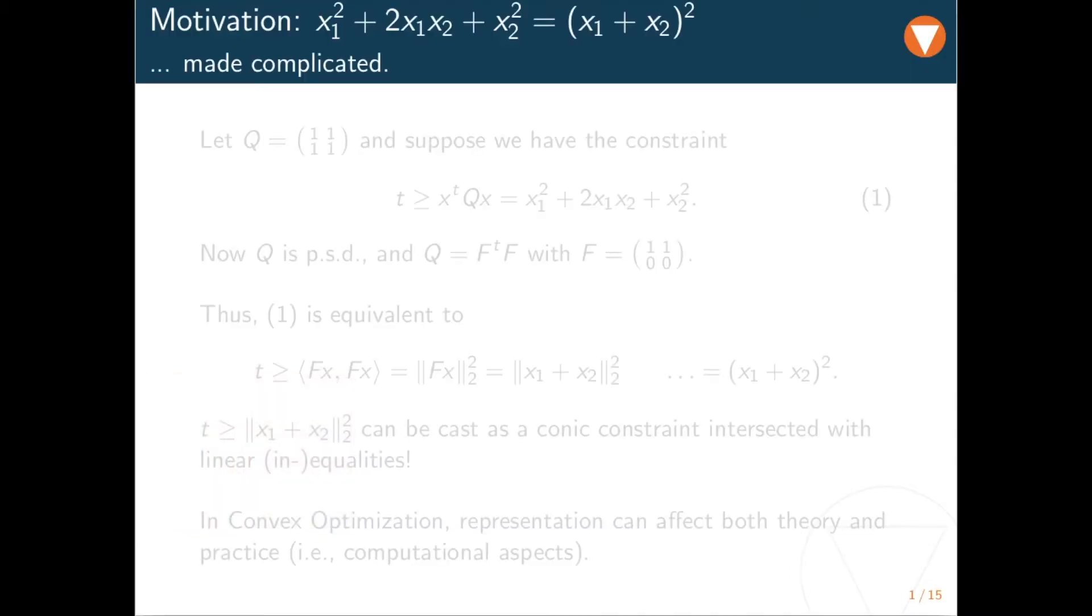I would like to start with this motivational slide and derive this formula that we all know from high school, but in a slightly different way. So take this quadratic constraint involving a matrix Q of all ones. You might have seen quadratic constraints in earlier lectures. What you can notice in this particular case is that Q is positive semi-definite, and can therefore be decomposed into the product of some matrix F with its transpose.